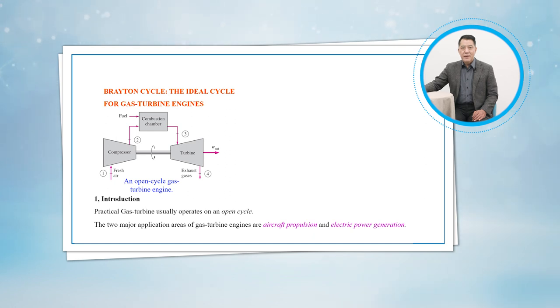The gas turbine cycle can also be executed as a closed cycle for use in nuclear power plants. This time, the working fluid is not limited to air, and a gas with more desirable characteristics can be used.